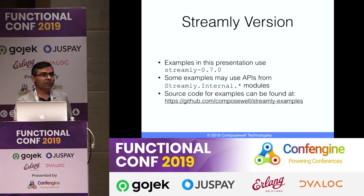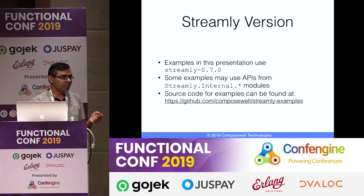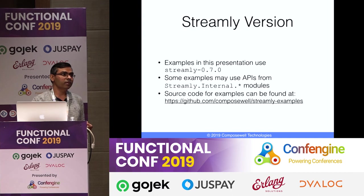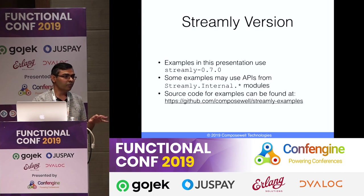We'll be using Streamly 0.7.0, which I released just yesterday. In some of the examples we'll be using internal APIs — they are stable APIs, but we haven't decided their names and module structure yet. They will be exposed later once we fit them into the module structure.